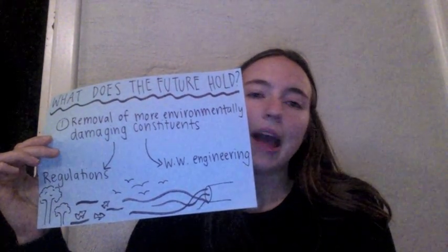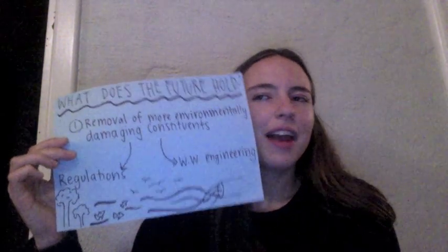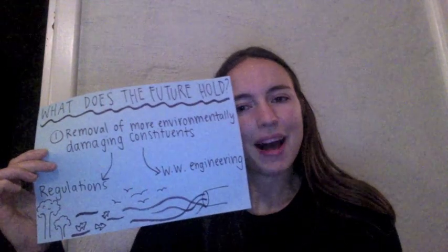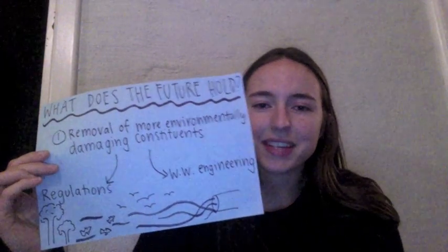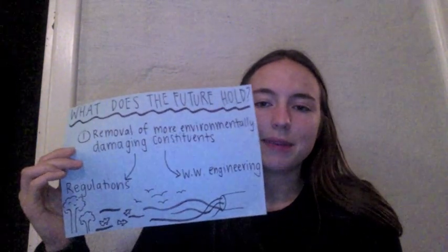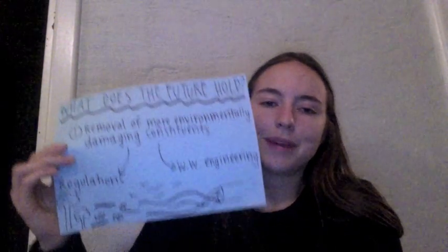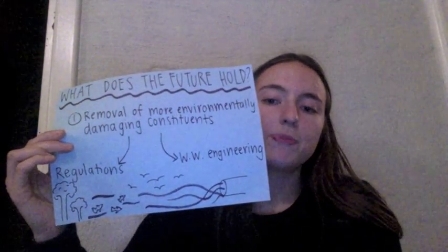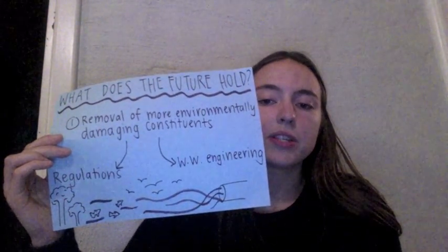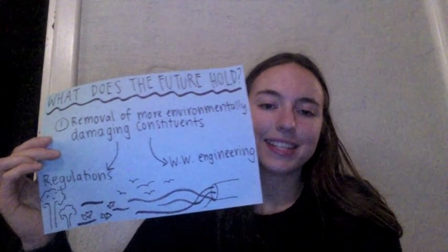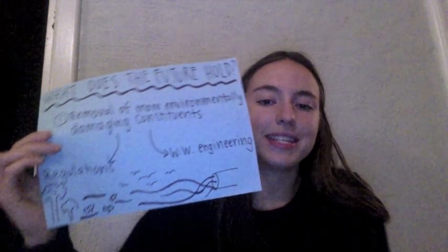Although this may sound like an impossible task, and I know that it might be, I think that we can start by identifying ones which have the most significant impact on the environment and trying to get rid of these ones first. A perfect example of this is oestrogen, as was discussed in last week's blog. An opportunity for improvement would be to set limits on the amount of oestrogen allowable in wastewater discharge in order to minimise the effect on fish populations. This would force wastewater engineering to develop treatment processes which can remove these constituents, improving wastewater engineering practices and the environment, particularly ecosystems in discharge zones.